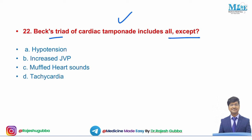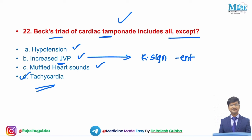Next question: Beck's triad of cardiac tamponade includes all except — hypotension, increased JVP, muffled heart sounds, or tachycardia. Beck's triad consists of hypotension, increased JVP, and muffled heart sounds. Tachycardia is not part of Beck's triad. Additionally, in cardiac tamponade, Kussmaul's sign is absent, the x-wave in JVP is exaggerated, and the y-wave is absent.